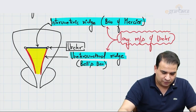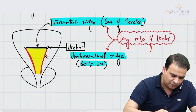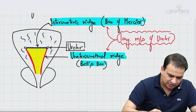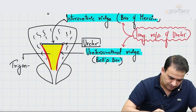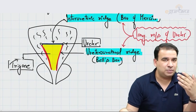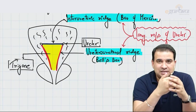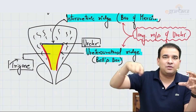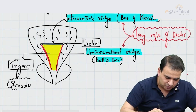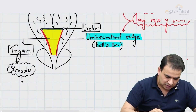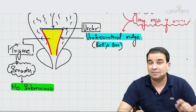The second important question from the interior of the bladder is about the trigone. The rest of the bladder has mucosal folds — rugae — but these are not seen in the trigone. The trigone is smooth because the mucosa of the trigone is directly adherent to the underlying musculature. There is no submucosa in the trigone. The submucosa connective tissue is what gives rise to the folds elsewhere, but in the trigone there is no submucosa, which is why it is smooth.